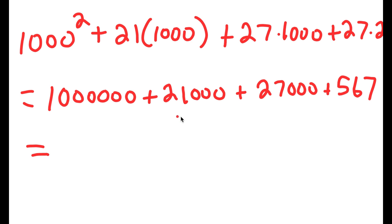Now, I'm going to add all of these up. So 21,000 plus 27,000 is 48,000. So I have 1,000,000 plus 48,000 plus 567, which is equal to 1,048,567.